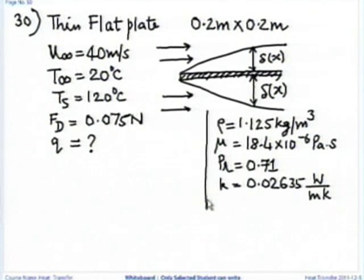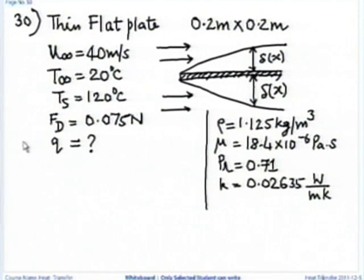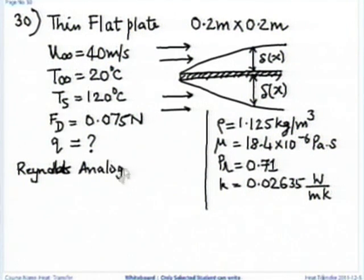To get Q = H·As·(Ts − T∞), I need to find H. Since the drag force is measured, I can invoke Reynolds analogy rather than computing H from scratch. Reynolds analogy states: Stanton number = Cfx/2, and Stanton number = Nu/(Re·Pr). The measured drag force is the most reliable input, so I use it to find Cfx directly.